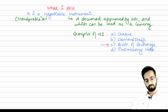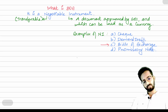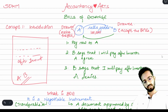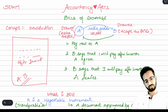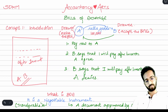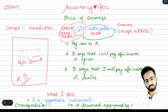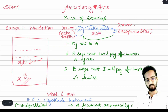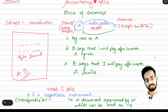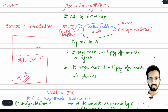To summarize: a bill of exchange is used when a person doesn't have money at a particular time and has to sign a document. The person who prepares the document is called the drawer, and the person who accepts it is called the drawee. We will understand more about bills of exchange with journal entries in the next video. Thank you so much.